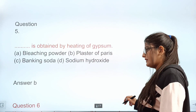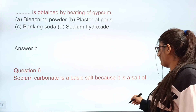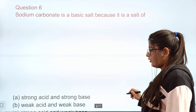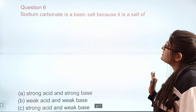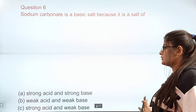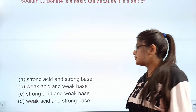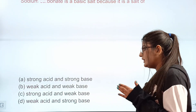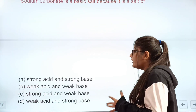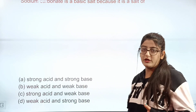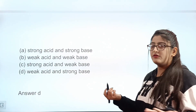Question 6: Sodium carbonate is a basic salt because it is a salt of blank blank. Options: A — strong acid and strong base. B — weak acid and weak base. C — strong acid and weak base. D — weak acid and strong base. Correct answer: D — sodium carbonate is formed from a weak acid and a strong base.